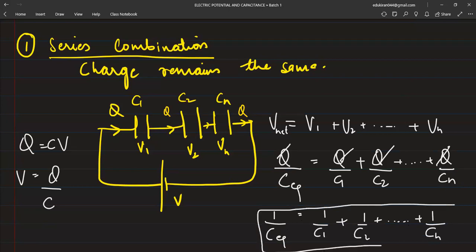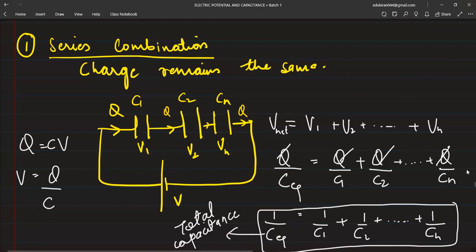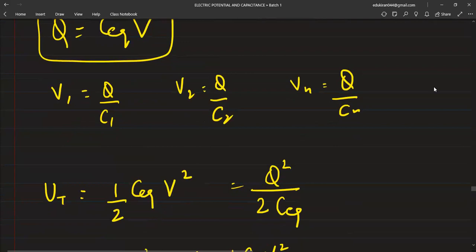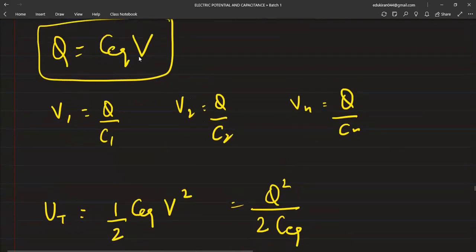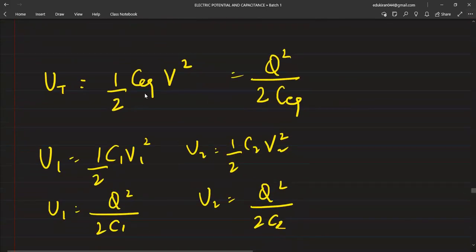This depends on the number of capacitors which are present - this is the total capacitance. Now, charge will be total capacitance into voltage. Individual voltages are Q by C1, Q by C2, Q by C_nth. For energy: half C_equivalent V squared is the total, or Q squared by 2C_equivalent. Individual energies will be half C1 V1 squared, half C2 V2 squared, or Q squared by 2C1, Q squared by 2C2.